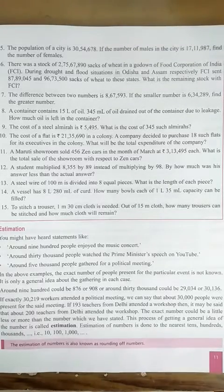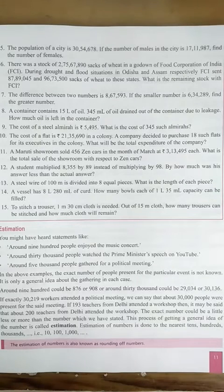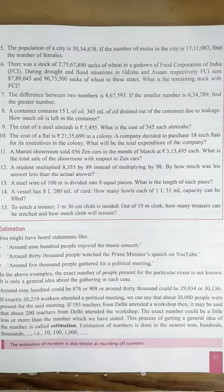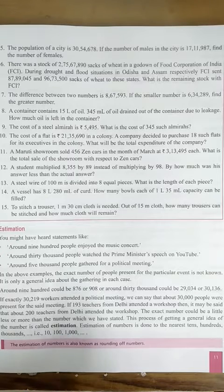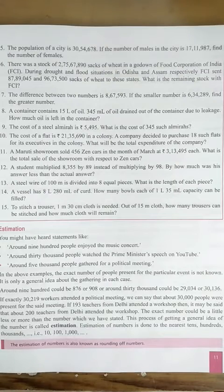Hello everyone, today we will discuss our next topic. First of all, tell me — have you heard statements like 'around 900 people enjoyed the music' or 'around 30,000 people watched the Prime Minister's speech on YouTube'? In these examples, the exact number of people is not given. Around 900 could be 886 or 908, and around 30,000 could be 29,034 or 30,136. So the exact number could be a little less or more than the number stated.